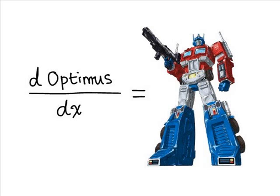Last but not least, the derivative. The derivative is a measure of how a function changes as its input changes. When taking a derivative, the notation looks like the picture. Read, the derivative of Optimus with respect to x is equal to Optimus Prime.